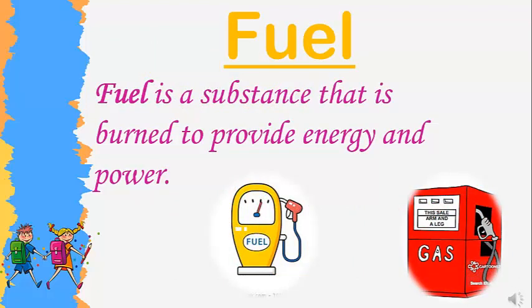So the first word was fuel. What do we mean by fuel? Let's read: fuel is a substance that is burned to provide energy and power. Fuel is that liquid which provides energy or gives power to vehicles — for example, your car, buses, bicycle, train, airplanes, trucks — all these vehicles use fuel to give them energy.